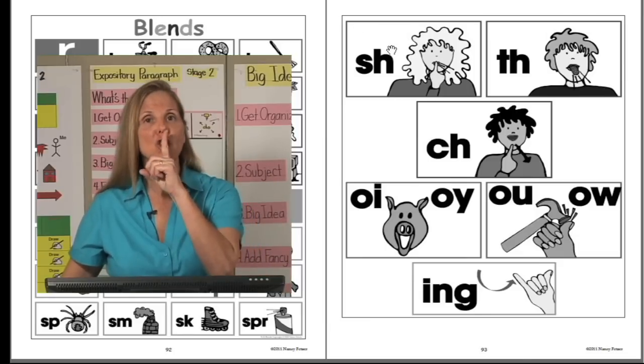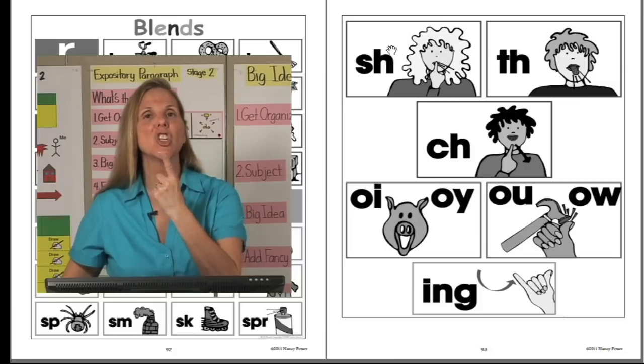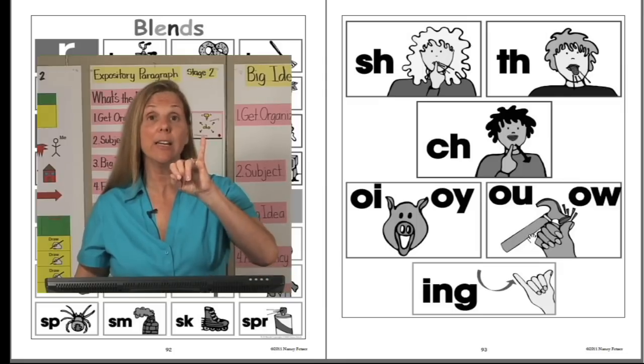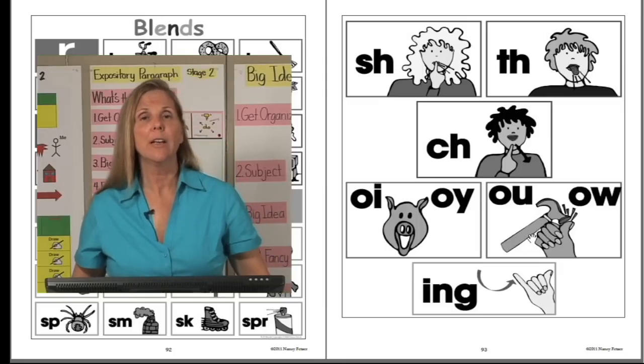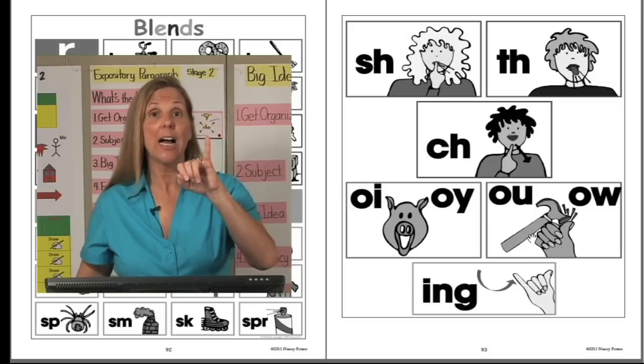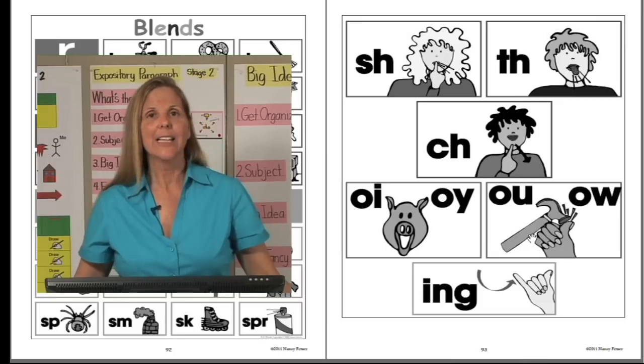S-H, shh, T-H, stick your tongue out, and C-H, chin, ch. In addition to those digraphs and diphthongs is the ing, that's an inflectional ending, and we make the little ing motion so that children when they're writing that ing ending they will start to learn ing, ing, spells ing, spells ing. It's a wonderful way for them to learn that common ending.